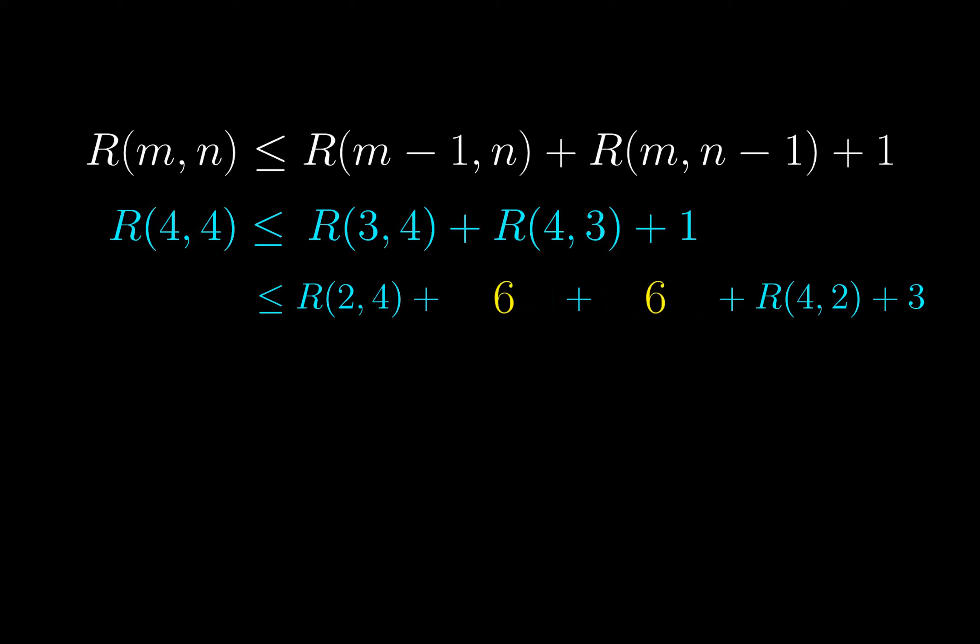Now we know that R(3,3) is 6. In fact, we proved it right in the beginning of this video. From the separate video, I detailed the reasons why both R(2,4) and R(4,2) equal to 4. So R(4,4) has an upper bound of 23. But that does not tell us what R(4,4) is exactly. We just know that it is smaller than or equal to 23.